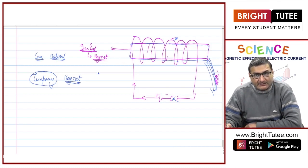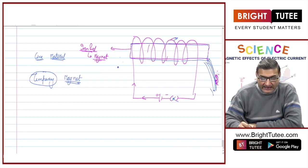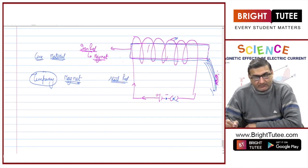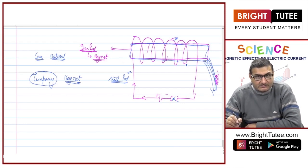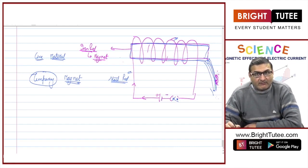This is the concept of temporary magnets. But if instead of taking an iron rod, I take a steel rod — the difference is, the moment I switch on the current, this steel rod will also become a magnet and it will attract pieces of iron towards it. But even after switching it off, it remains a magnet.